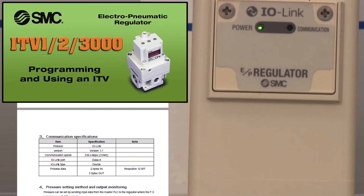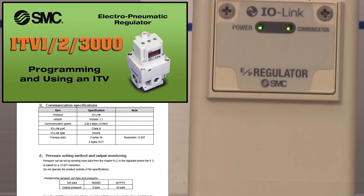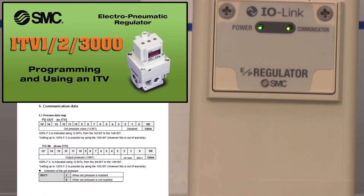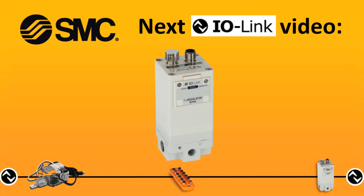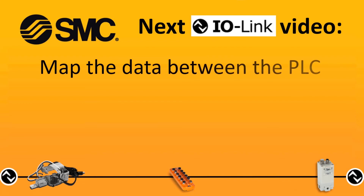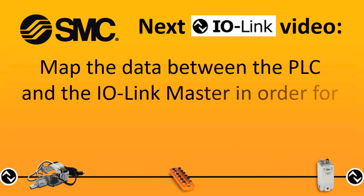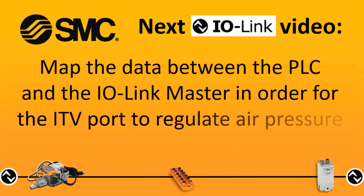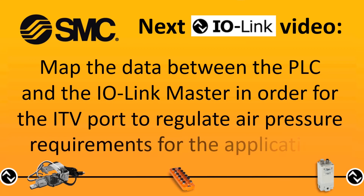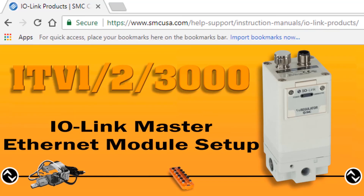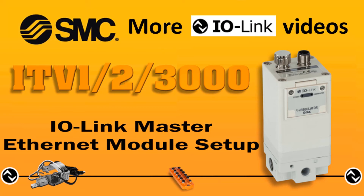Now that we have verified that all devices are on the network and programming is complete, we're ready for the next step. We hope you found this video useful. In the next video, we will map the data between the PLC and the IO-Link Master in order for the ITV port to regulate air pressure requirements for the application. To be continued.